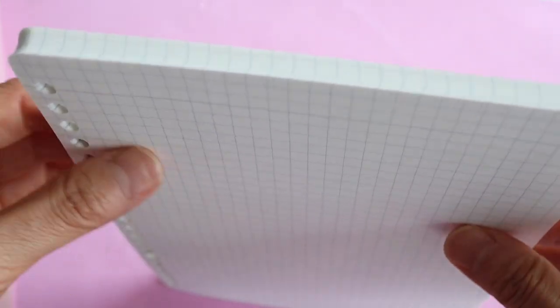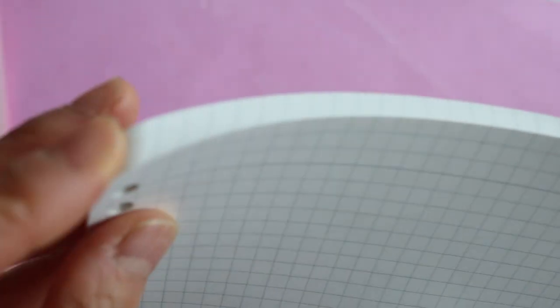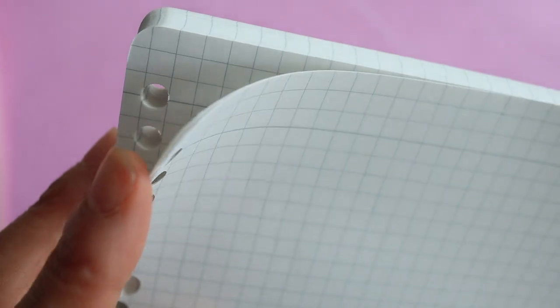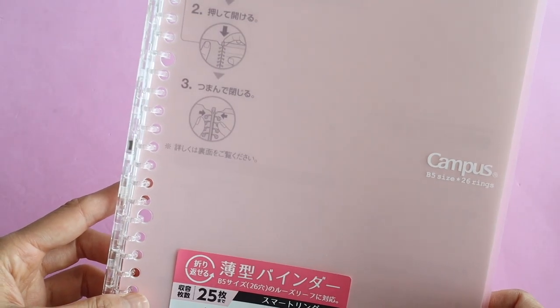They sell graph paper as well as plain paper. But the only downside about this binder is that you do have to buy replacement paper because the initial binder only comes with 10 sheets. I have long since graduated but this binder makes me want to go back to school and take some notes.